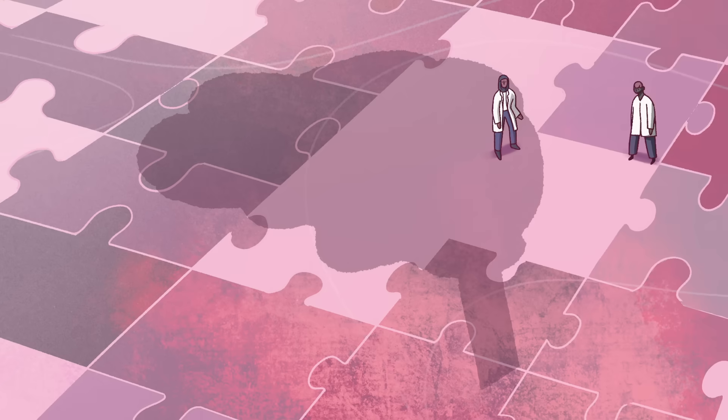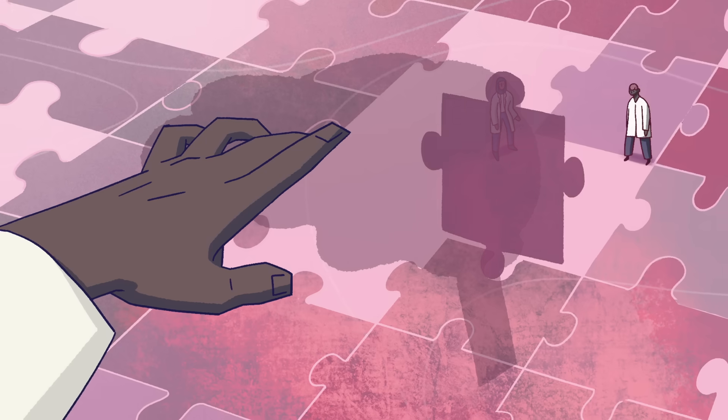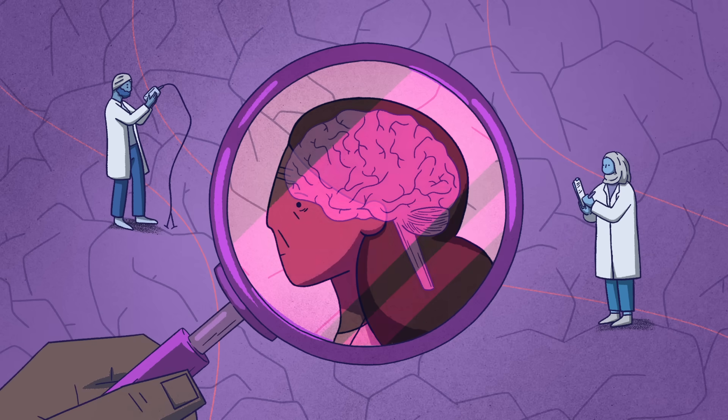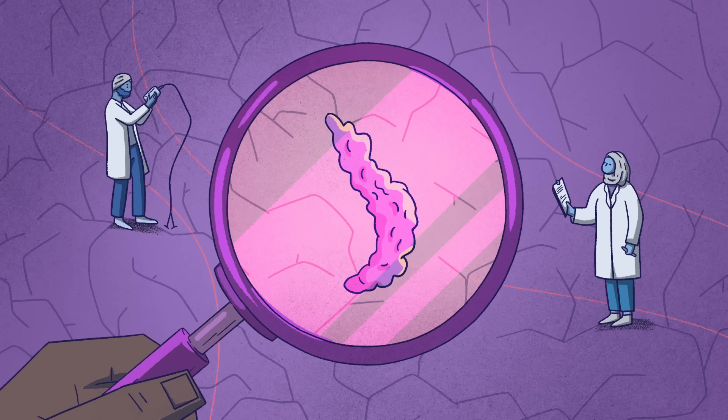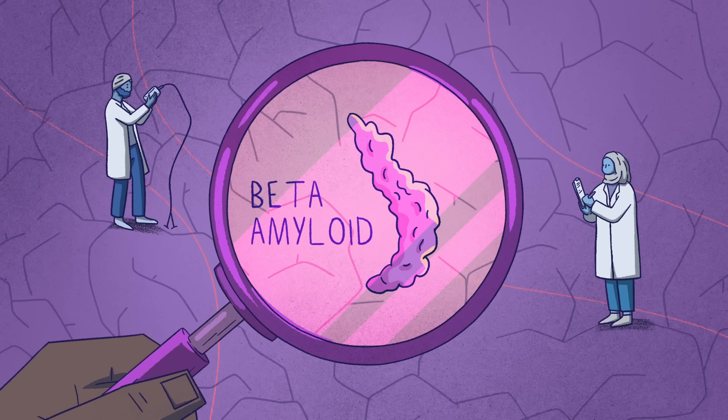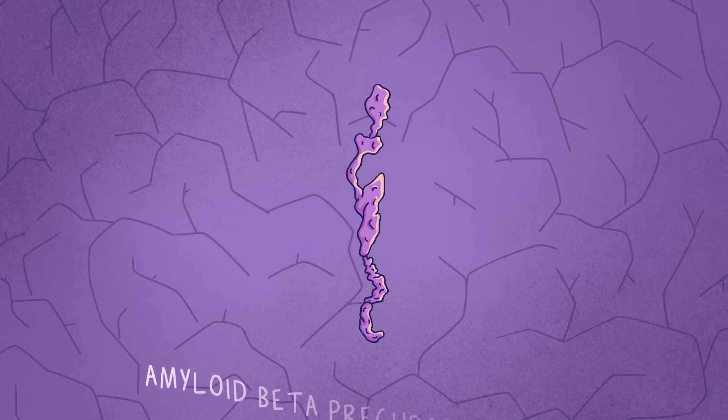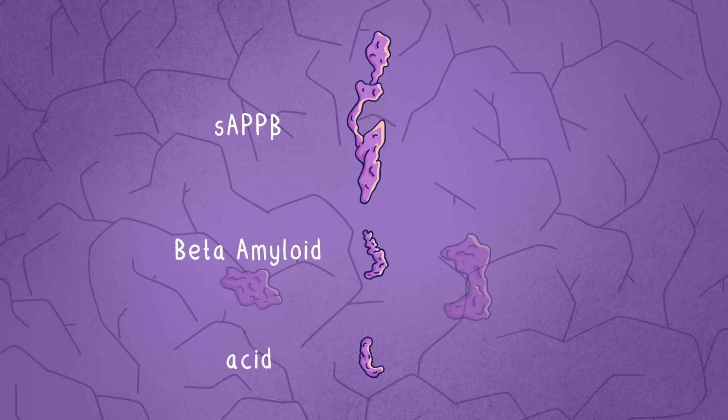But thanks to continued research, they're beginning to put this puzzle together. Initially, scientists noticed that the brains of Alzheimer's patients display an abnormal buildup of a compound called beta-amyloid. Beta-amyloid is created when a large protein, amyloid beta-precursor protein, or APP, is broken down.